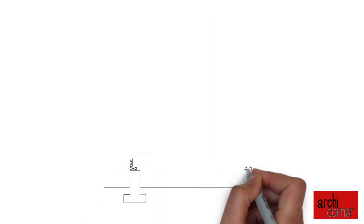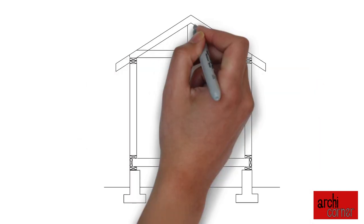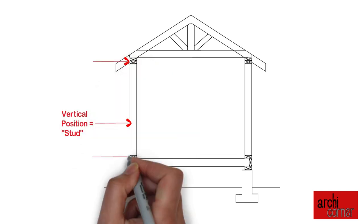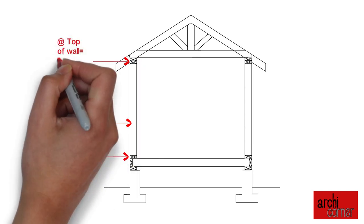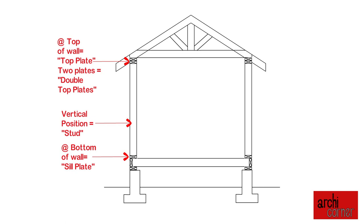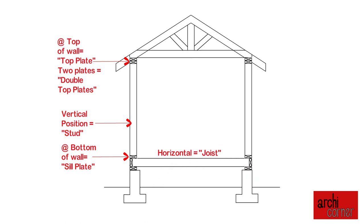Looking at a typical residential cross-section, this is the typical diagram you might see. Applying names to it — assuming this is all framed with a 2x4 — you have your vertical members within the walls, which are made of studs. Then at the top and bottom of the wall, you have your plates. At the bottom, you have your sill plate, and at the top you have your top plate, oftentimes a double top plate. Then on your floor, you have joists, which run horizontally and are usually laid on their side.